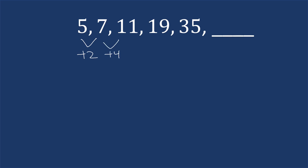Looking at this next example: going from five to seven, we're adding two. Going from seven to eleven is adding four. Going from eleven to nineteen is adding eight. Going from nineteen to thirty-five, we're adding sixteen. So the amounts we're adding are: two, four, eight, sixteen.